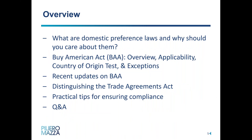First, we want to give you an overview of what we're going to touch on today. We want to talk about the domestic preference laws and why you should care about them. Then we'll dive into the Buy American Act, touching on an overview, its applicability, what the test is for determining country of origin, and exceptions that apply. Then we'll provide some recent updates on BAA — we've had some action at the beginning of the year.